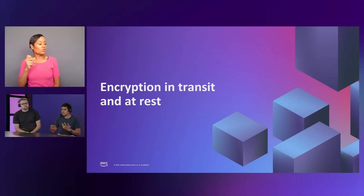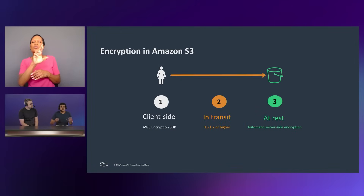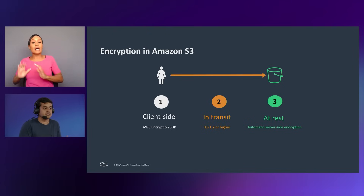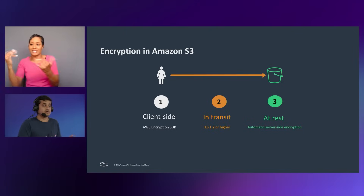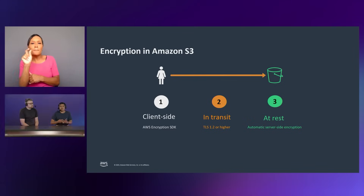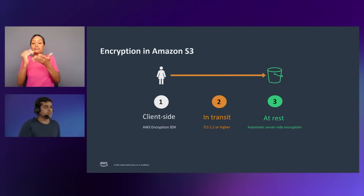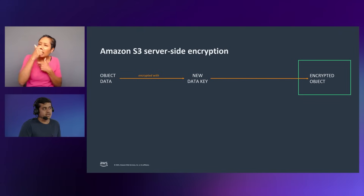At a very high level, Amazon S3 provides the capability for you to achieve end-to-end encryption. You can encrypt data client-side using the encryption SDK, which makes it really easy to encrypt data even before you send it to S3. You can encrypt your data in transit — the new minimum is TLS 1.2 — and data is encrypted before it's stored at rest. We provide multiple server-side encryption offerings that customers can choose to meet their needs.